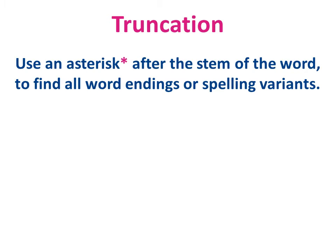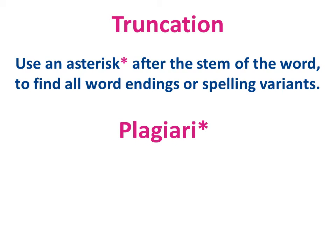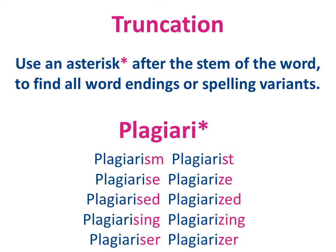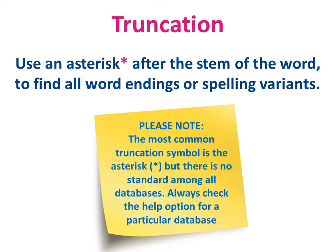By placing an asterisk after the stem of the word — in this case after the second I in plagiarism — the resource will look for all of the different word endings and spelling variants simultaneously. Please note that whilst an asterisk is the most commonly used truncation symbol, some resources vary. Check the help feature of the resource you are using.